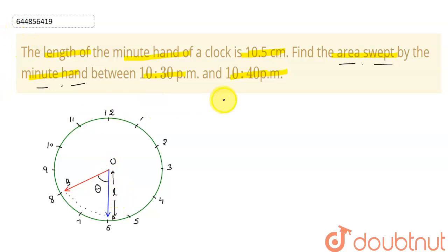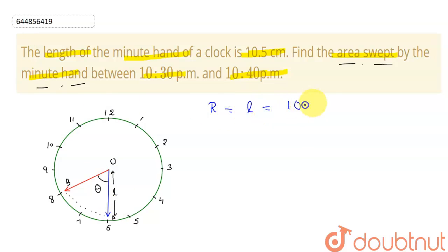The radius will be equal to the length of the minute hand, which is given to us as 10.5 centimeters. But to calculate the area of this sector, we need to first find the angle theta.